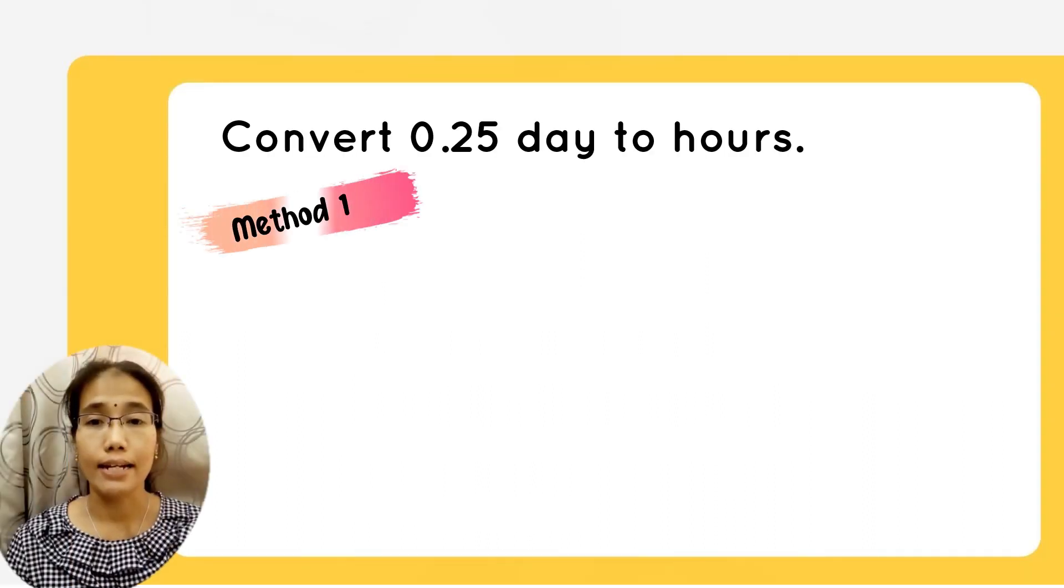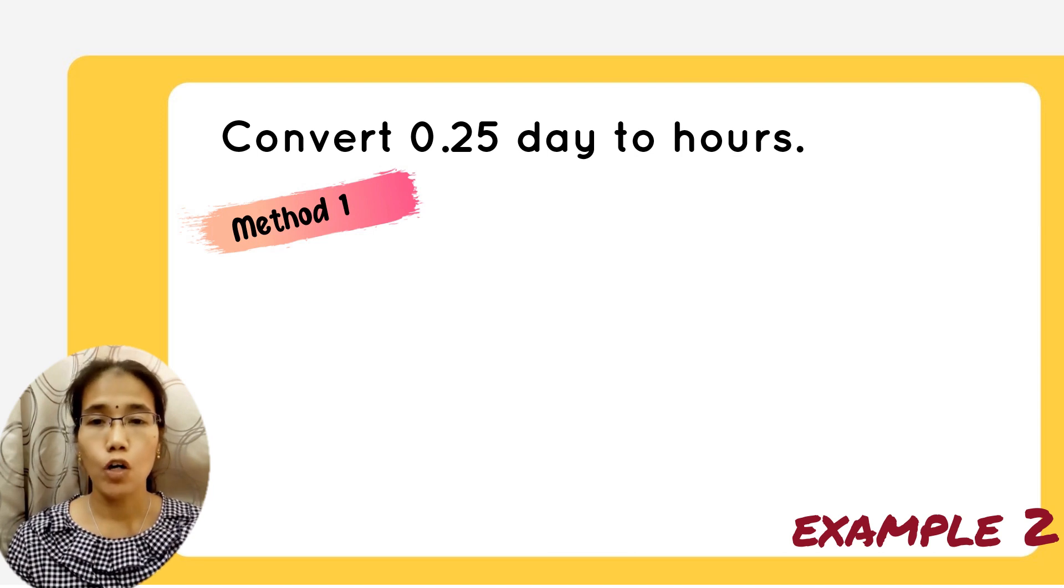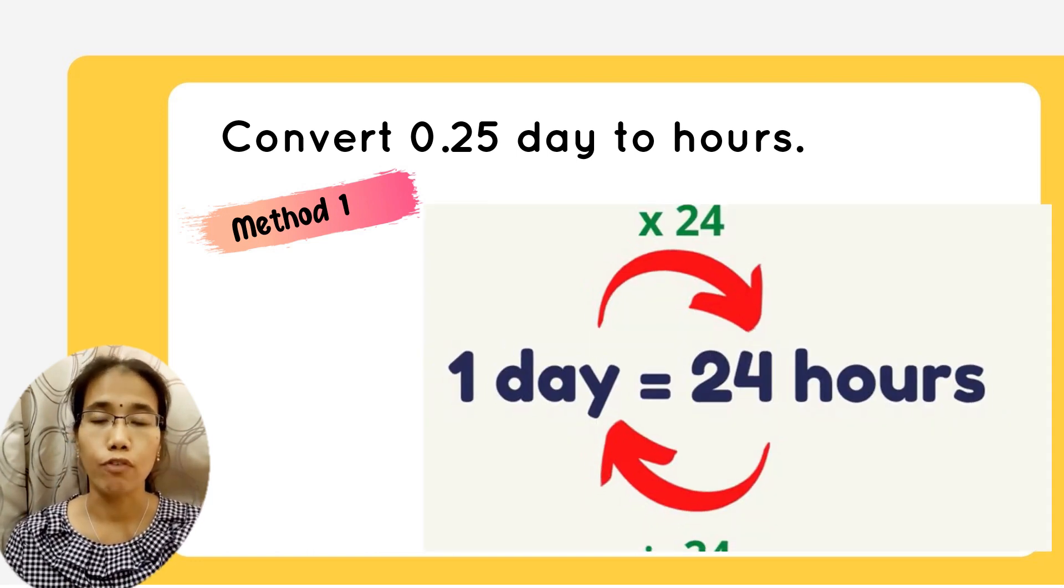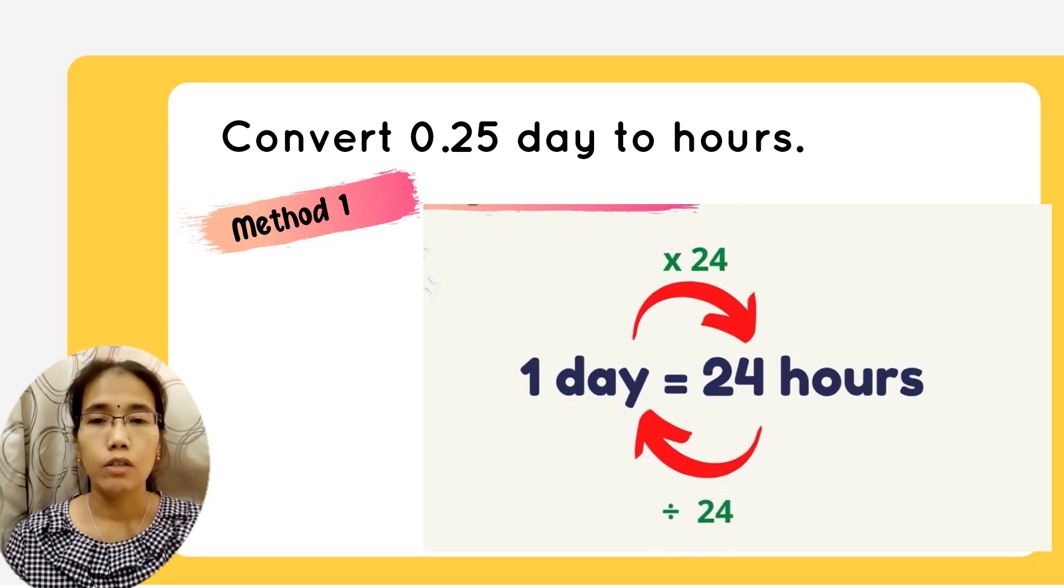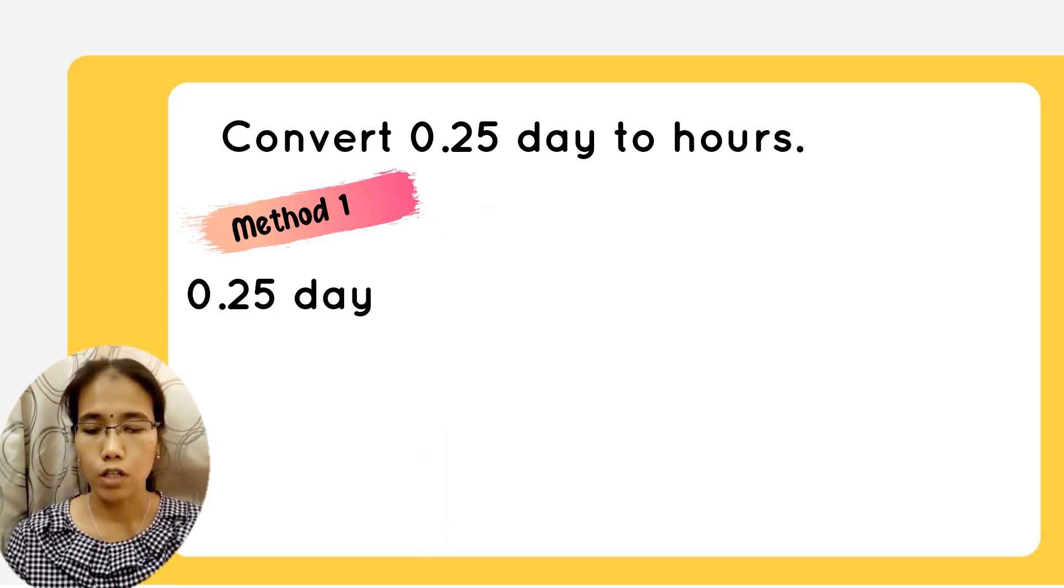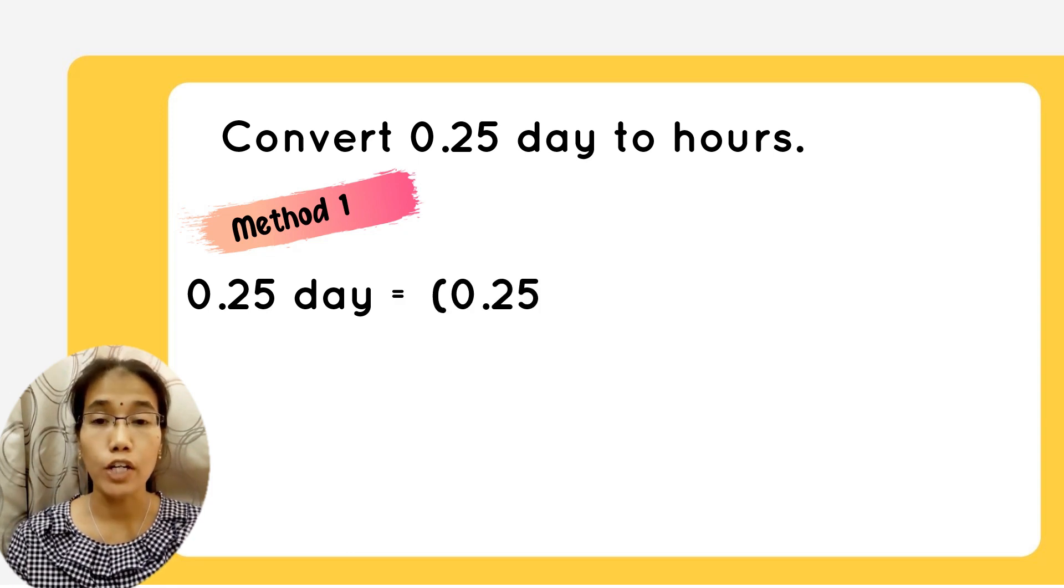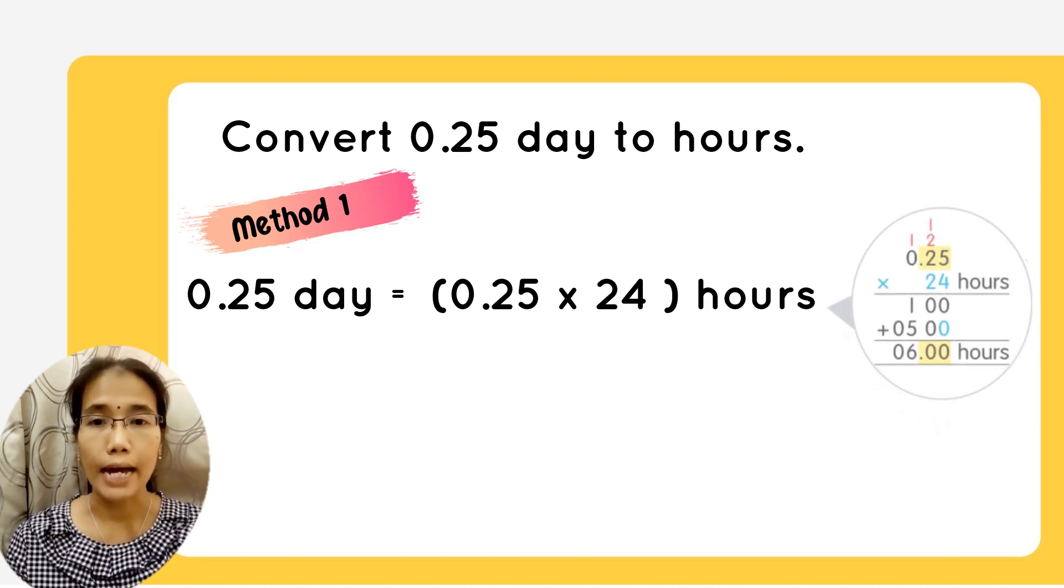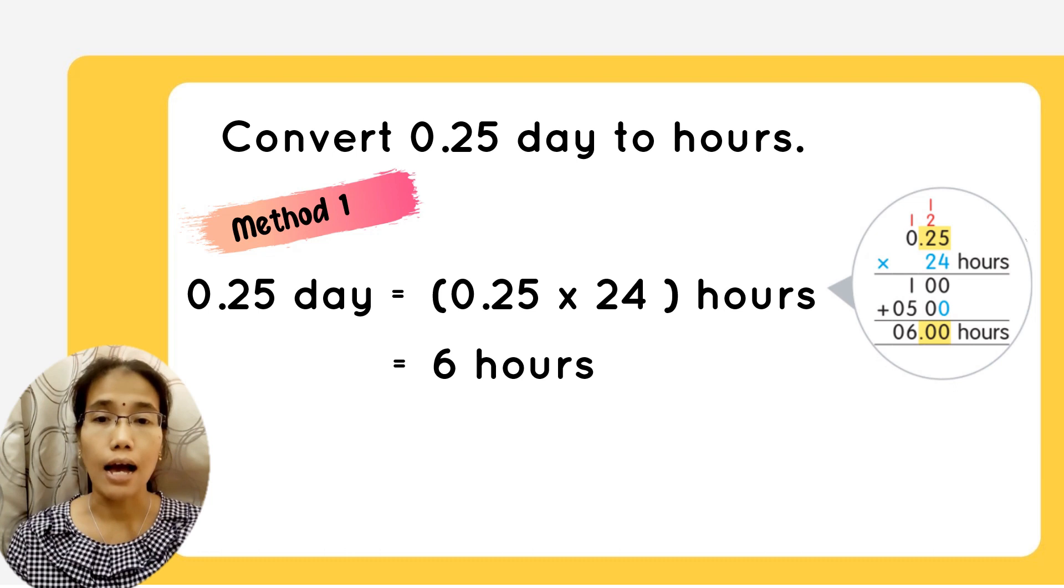Let's see another example. Convert 0.25 day to hours. Again, one day is equals to 24 hours. To convert day to hours, you multiply with 24. So, 0.25 times 24, you perform the normal multiplication involving decimal. You will get 6 hours.